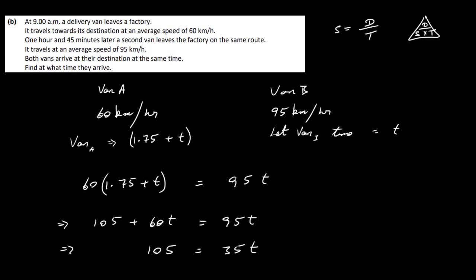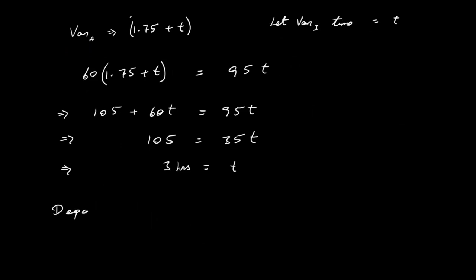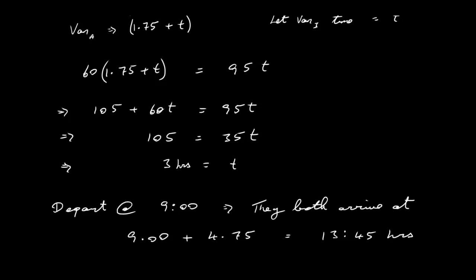The question here says, find at what time they both arrive. If they depart at 9 o'clock, 9 a.m., that means they both arrive at 9 plus 4.75, which is equal to 13.75, or 13:45 hours. That's the answer. That's what time they arrive at. And that's it for this particular question. Thank you.